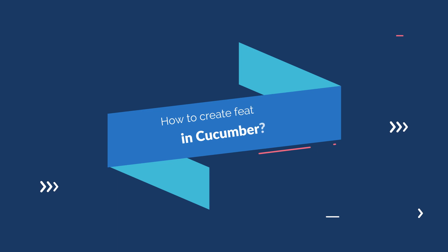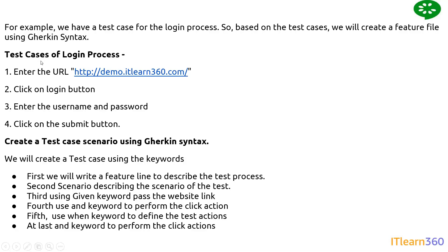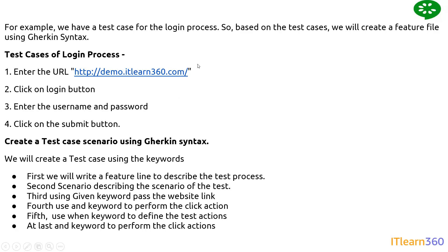Now we'll see how to create a feature file in Cucumber. First we need to understand how to start writing Gherkin test scenarios. For example, here are test cases for a login process. I'm writing a scenario for a login process: first I pass the URL, second I click on the login button, then I enter the username and password, and I click on the submit button. This uses a demo website link from IT Learn.